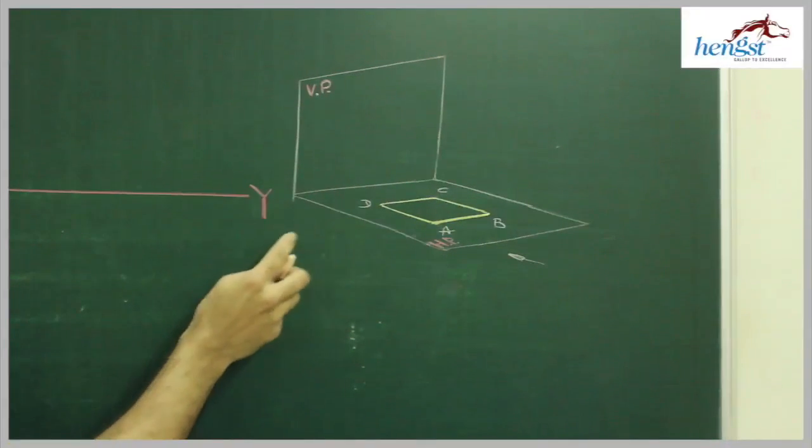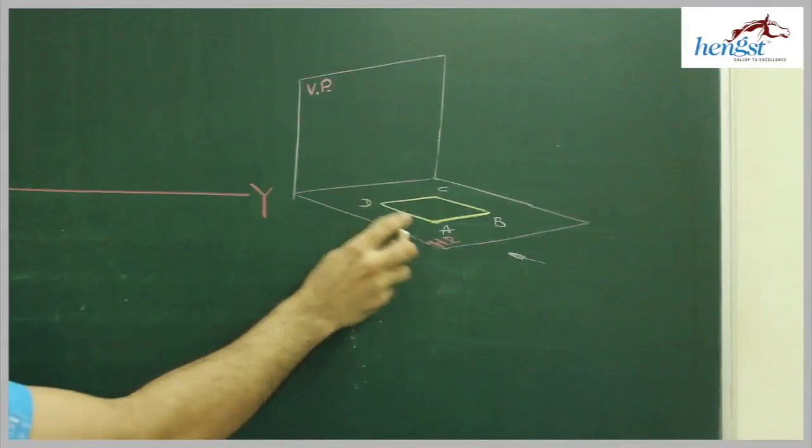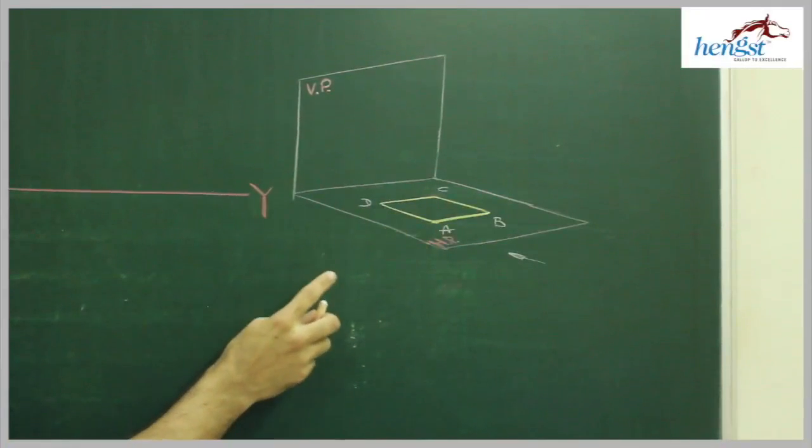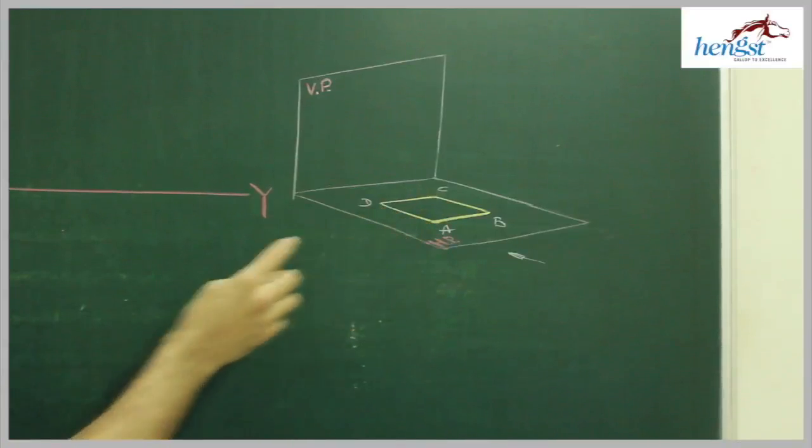So when you see from the front, you will see just a line, but when you see from the top, you will see the true shape. The true shape is square ABCD.